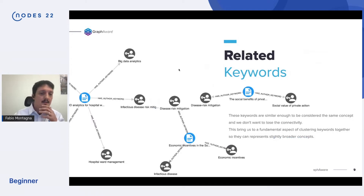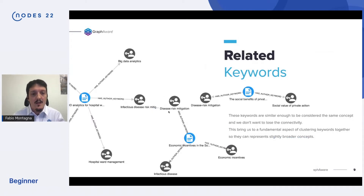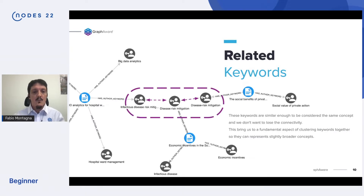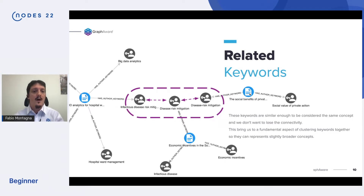If we look closely at the dataset, we may see other keywords that are capturing the same content. For example, here we have 'missing infectious' with an extra dash, but we're essentially capturing the same concept and would like them to be connected. This relationship exists not because of the data we ingested, but because of the meaning of the keyword. We don't want to lose this connectivity when we do our analysis.